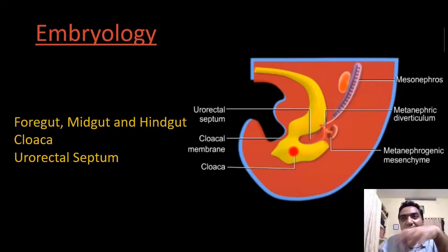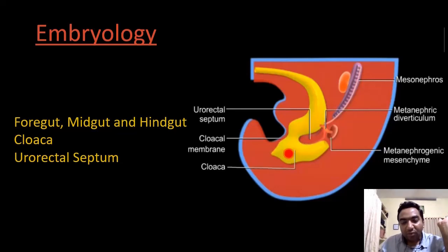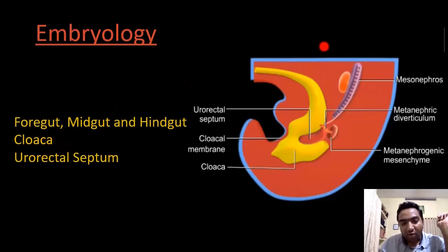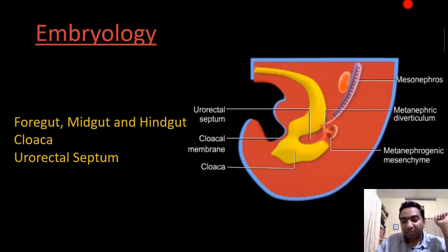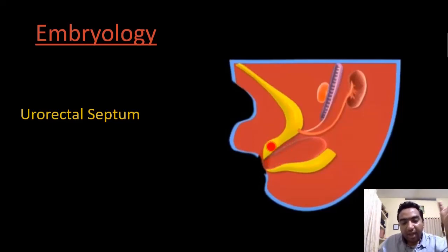The anterior part becomes the urogenital part and the posterior part becomes the gastrointestinal system. When both the endodermal system and the gastrointestinal system open into one opening, that part is called the cloaca. This is the urorectal septum which divides the hindgut into the anterior genitourinary part and the posterior rectum.